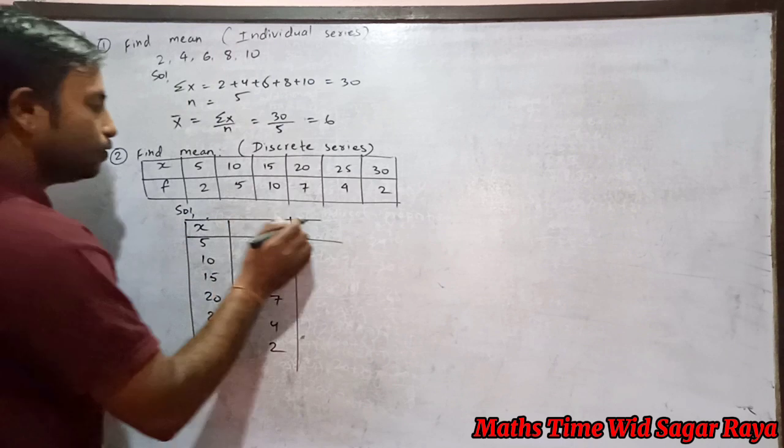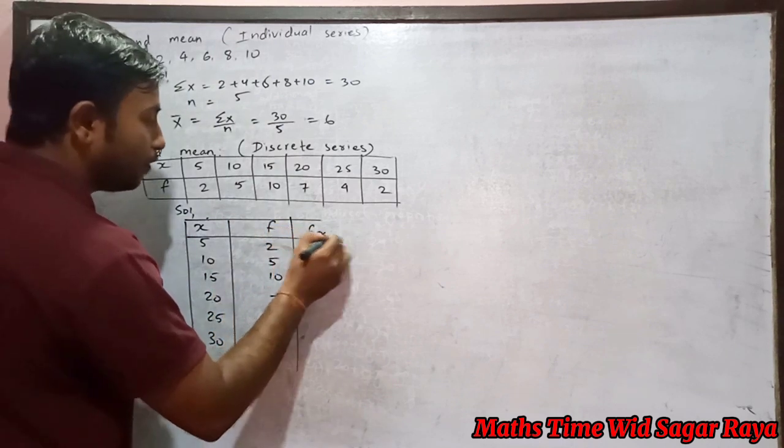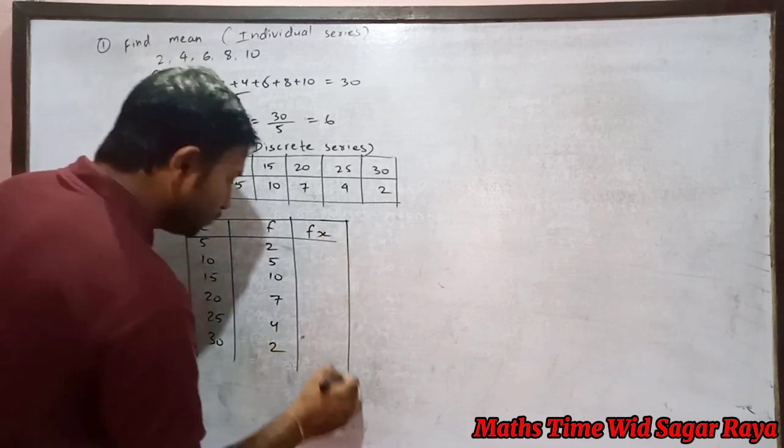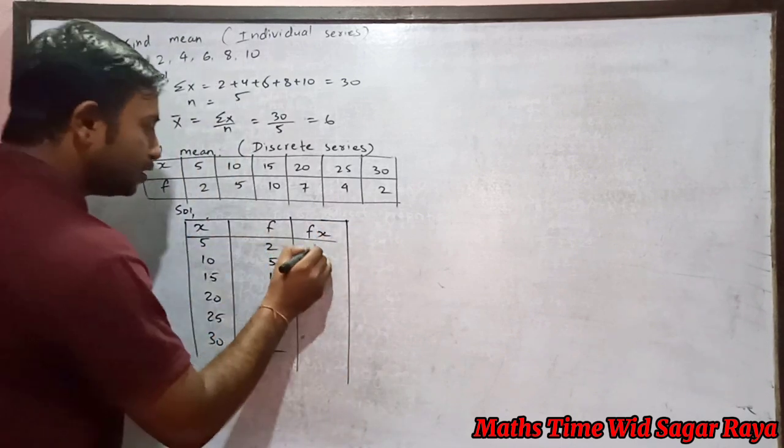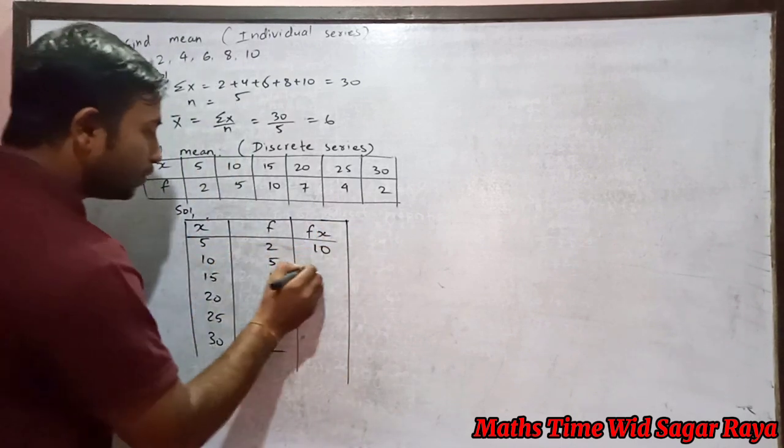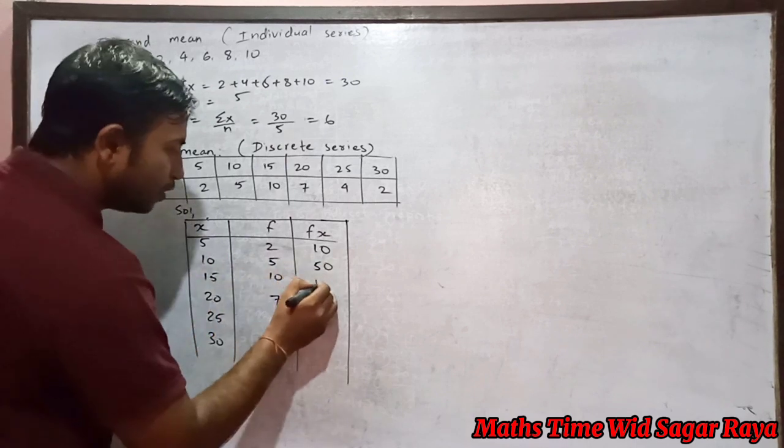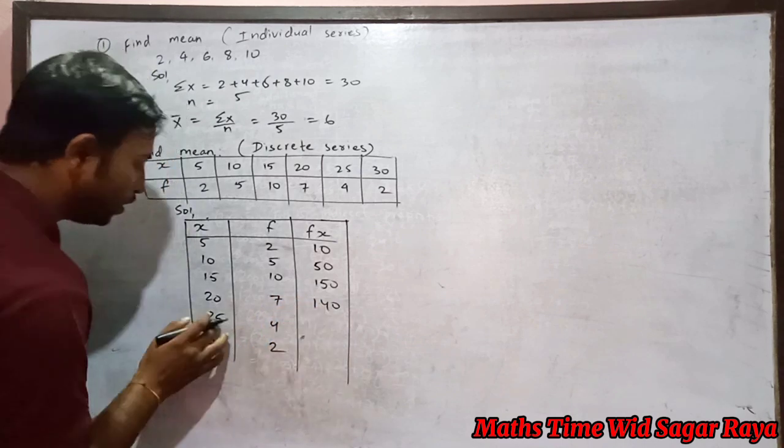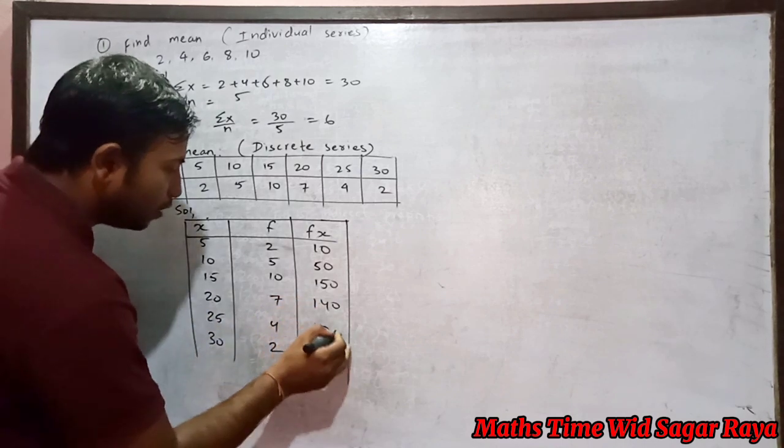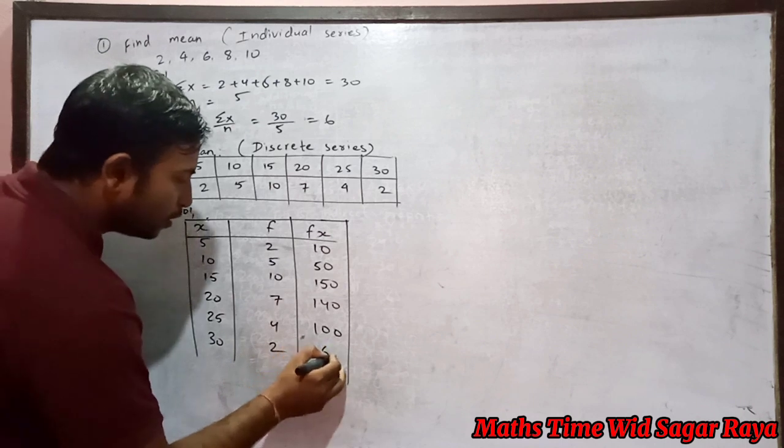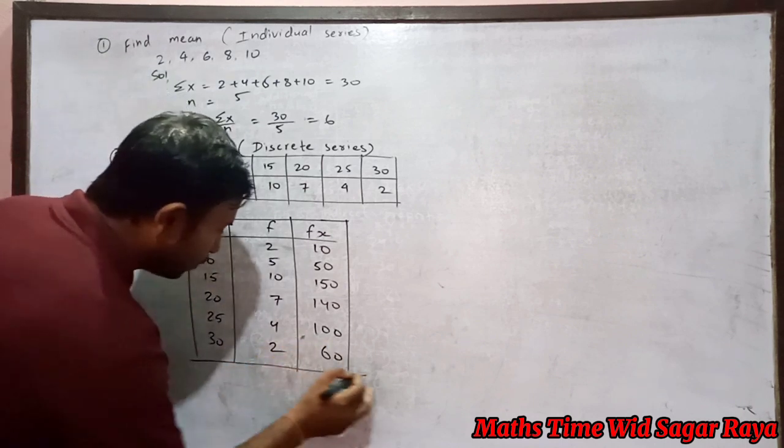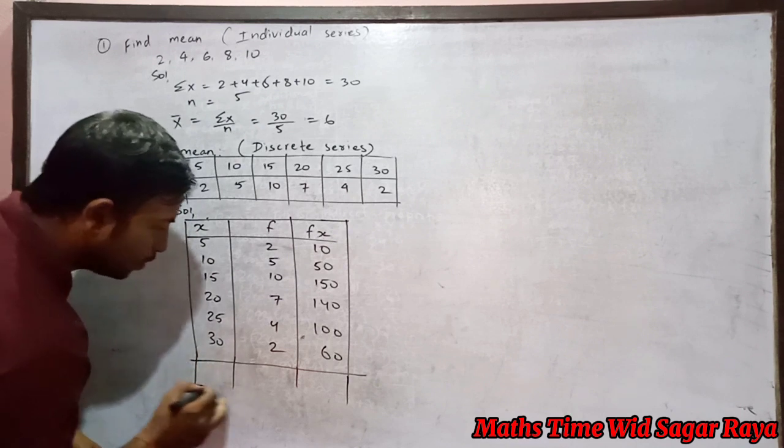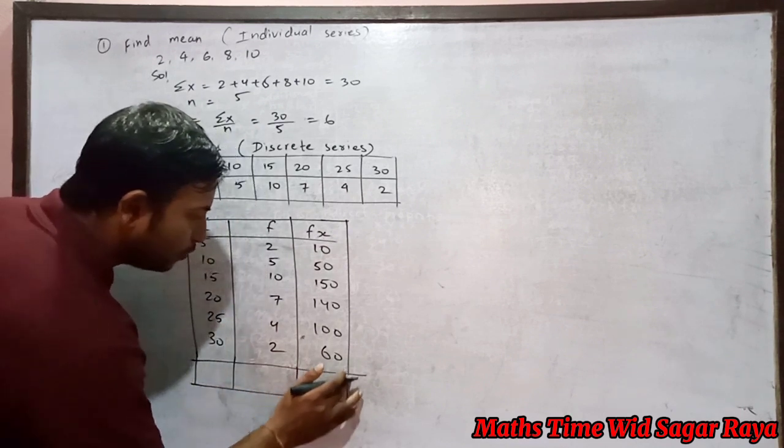Now x into f, we can write here fx. So now 5 times 2 is 10, 10 times 5 is 50, 15 times 10 is 150, 20 times 7 is 140, 25 times 4 is 100, 30 times 2 is 60. After this we have to find sigma fx.